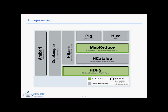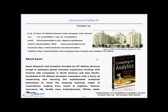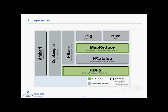HCatalog is a metadata repository that allows you to share metadata across different sources — we don't have to care about where the data resides or in what format it resides. Ambari and Zookeeper enable highly reliable distributed coordination.